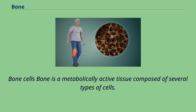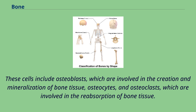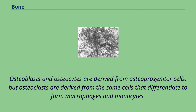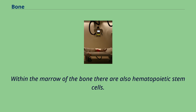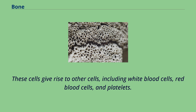Bone is a metabolically active tissue composed of several types of cells. These cells include osteoblasts, which are involved in the creation and mineralization of bone tissue, osteocytes, and osteoclasts, which are involved in the reabsorption of bone tissue. Osteoblasts and osteocytes are derived from osteoprogenitor cells, but osteoclasts are derived from the same cells that differentiate to form macrophages and monocytes. Within the marrow of the bone there are also hematopoietic stem cells, which give rise to white blood cells, red blood cells, and platelets.